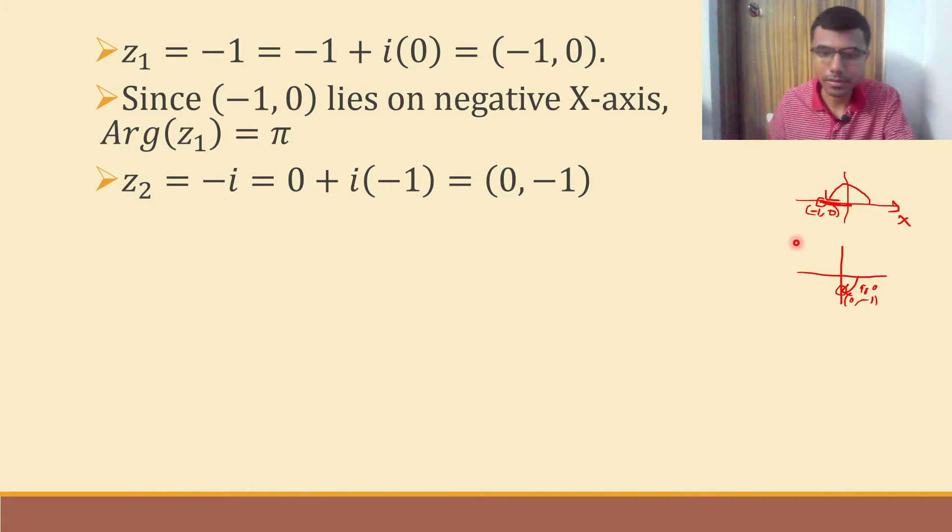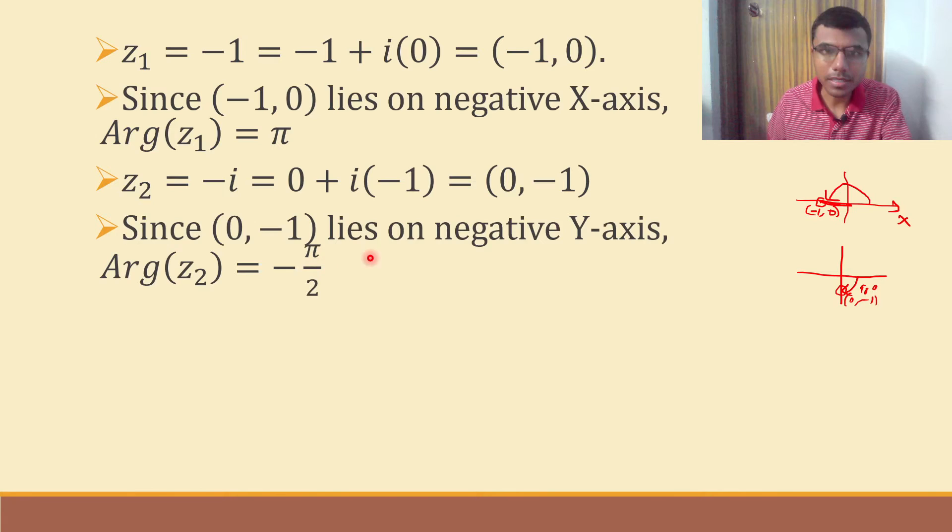Since it lies on negative y-axis it is minus. Now why? Because argument of a complex number always lies between, I mean argument of a complex number belongs to open minus pi to closed pi.